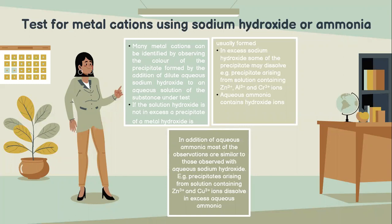Test for metal cations using sodium hydroxide or ammonia. Many metal cations can be identified by observing the colour of the precipitate formed by the addition of dilute aqueous sodium hydroxide to an aqueous solution of the substance under test. If sodium hydroxide is not in excess, a precipitate of a metal hydroxide forms. In excess sodium hydroxide, some of the precipitate may dissolve. For example, precipitates arising from solutions containing Zn2+, Al3+, and Cl3+ ions.